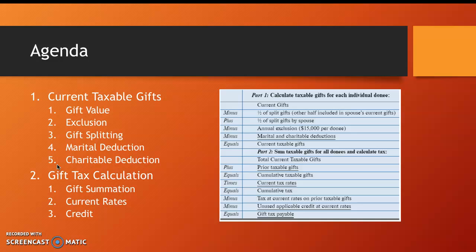Then we'll talk about the annual exclusion to avoid gift taxes on monetarily small gifts. Then we'll discuss marital gift splitting as well as the marital deduction. To round up the current taxable gift calculation section, we will talk about the organizations that qualify a gift giver for a charitable deduction.